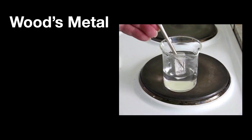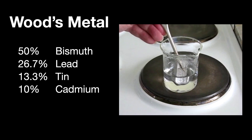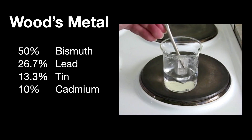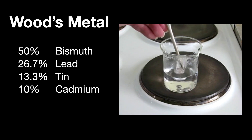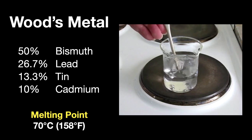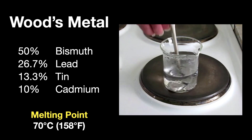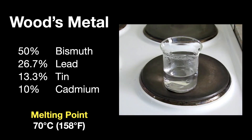In 1860, Barnabas Wood announced the discovery of an alloy of bismuth, lead, tin, and cadmium in proportions such that it had a very low melting point. Wood's metal melts at a low, low 70 degrees Celsius — or 158 degrees Fahrenheit. A nice cup of tea would melt a spoon made of this, but I wouldn't drink that tea. Here you see a small ingot of Wood's metal melting in a hot beaker of water.